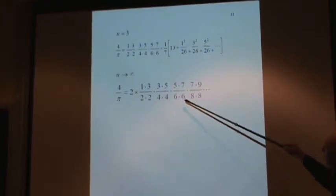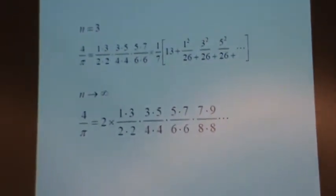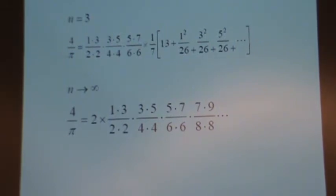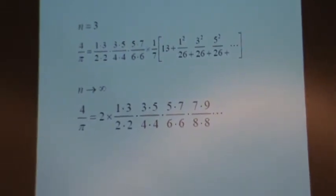And then finally, as n goes to infinity, you get the Wallace product. So that's just an observation that there's actually, you can arrange that in that morphing-like way.